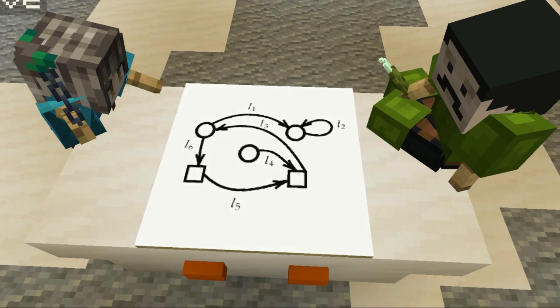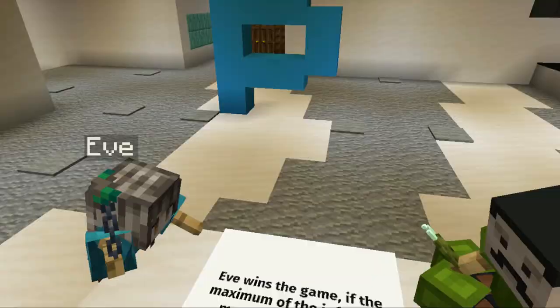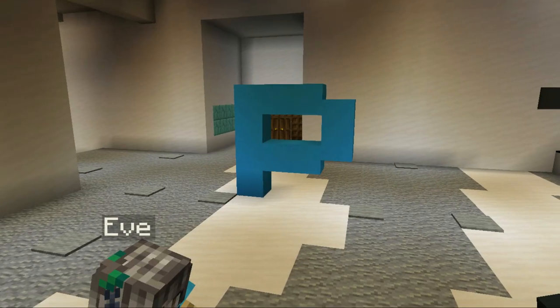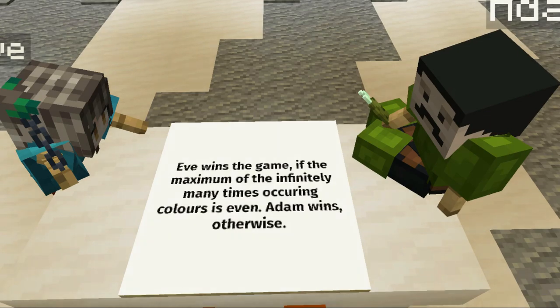There are some well-known objectives one of which is parity and we denote it by P. It says that Eve wins the game if the maximum of the infinitely many times occurring label is even and Adam wins otherwise.